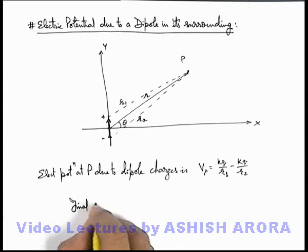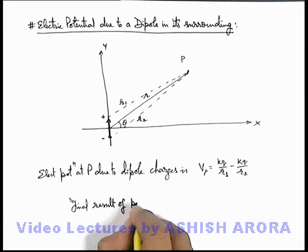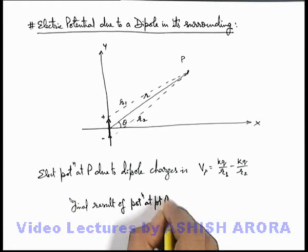Here if we mathematically analyze and calculate, the final result I am writing here. Final result of potential at point P is: